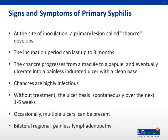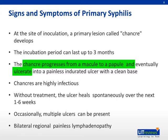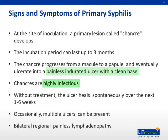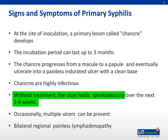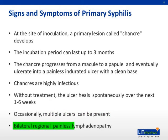At the site of inoculation, a primary lesion called a chancre develops after infection. The chancre progresses from a macule to a papule and finally to an ulcer. It is classically described as a painless, indurated ulcer with a clean base. This lesion is highly infectious. Over a course of one to six weeks, the lesion heals spontaneously even without any treatment. Occasionally, multiple lesions may be present. Regional painless, rubbery, bilateral lymphadenopathy may also be present.